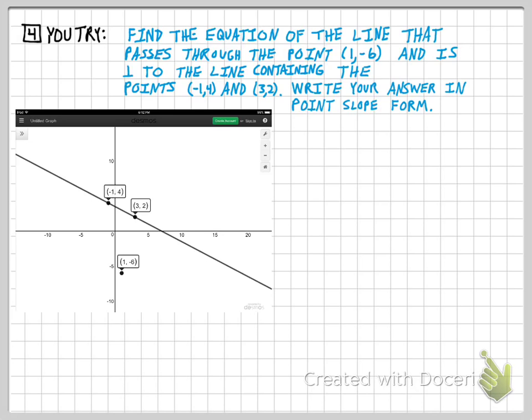Box 4, another you-try. Find the equation of the line that passes through the point 1, negative 6, and it's perpendicular to the line containing the points negative 1, 4 and 3, 2. And we're going to write our answer in point slope form.